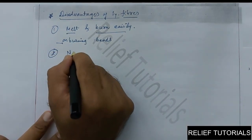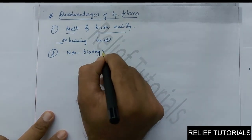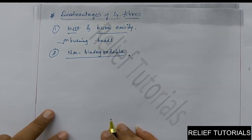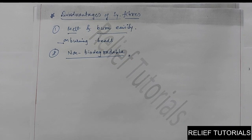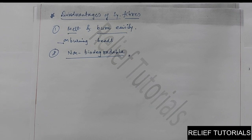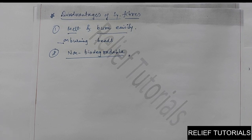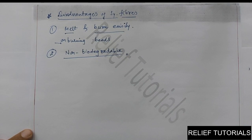The second disadvantage is that synthetic fibers are non-biodegradable. Since they cannot be attacked by moths, they cannot be decomposed by bacterial or fungal activity. Once synthetic fibers such as nylon or polyester are used and thrown on the soil, they remain in the environment for many years. They cause soil pollution when thrown on soil, water pollution when thrown into water, and air pollution when burned.